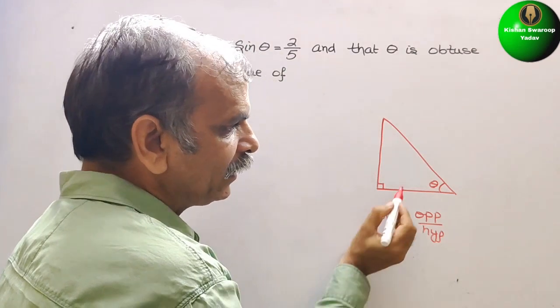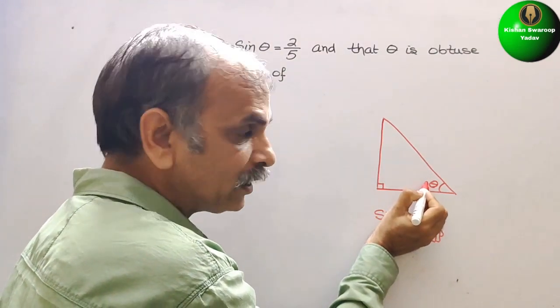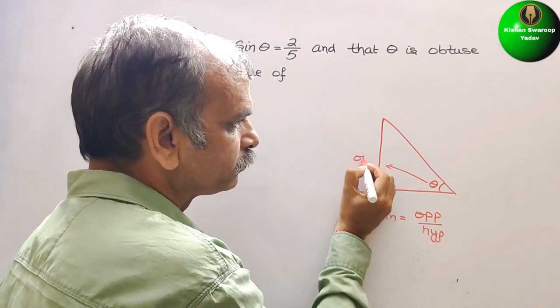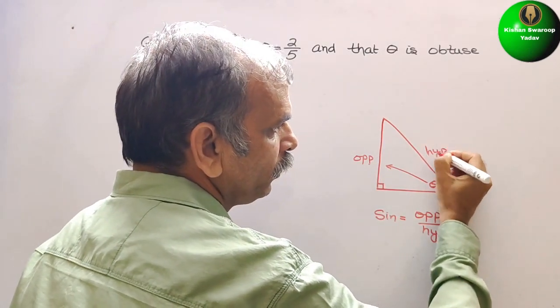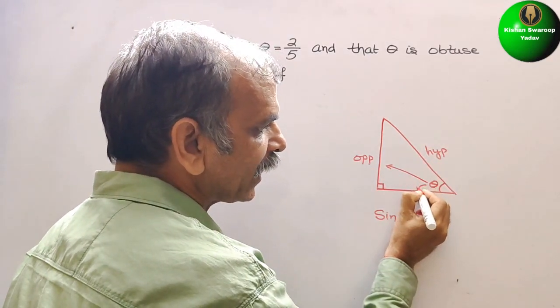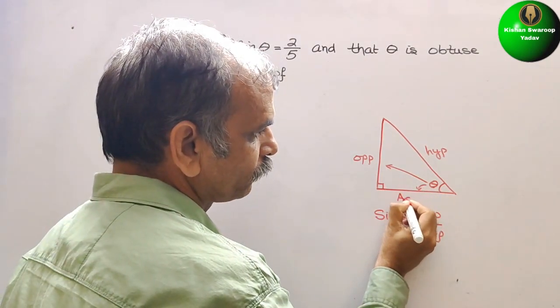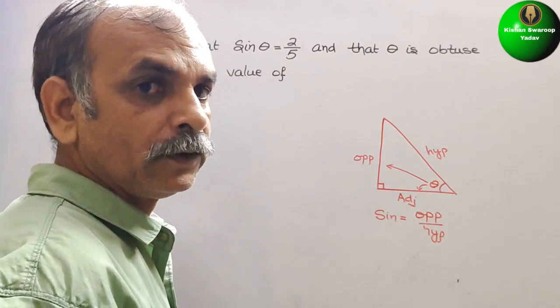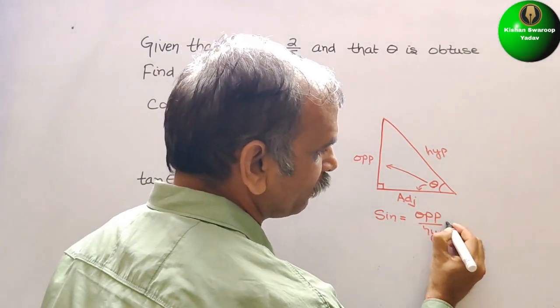So we know that theta, this angle, the opposite side is this, so this is opposite. This will be hypotenuse and this is the neighboring side that is known as adjacent. Now, they have given 2 by 5, so simply we will write here 2 by 5.